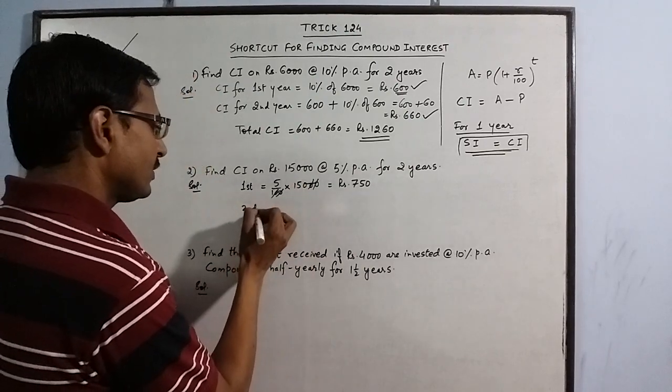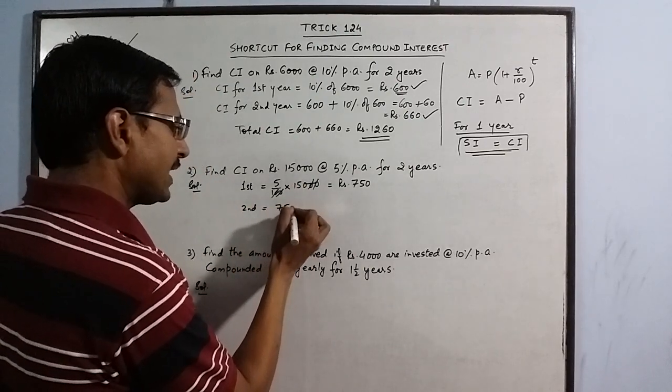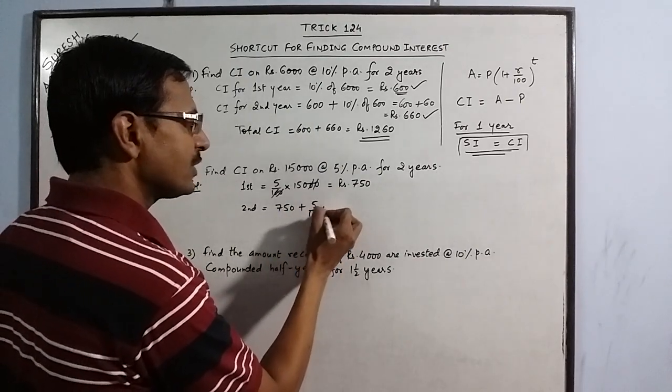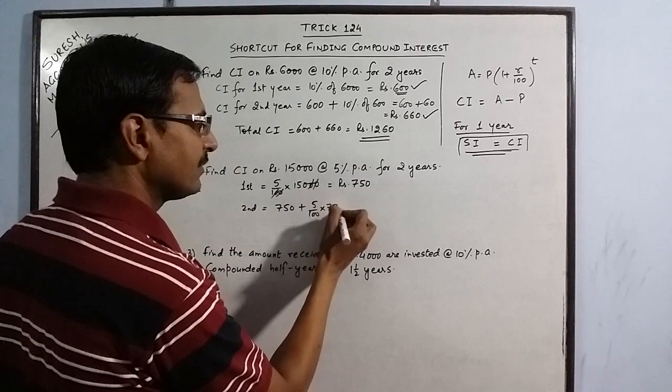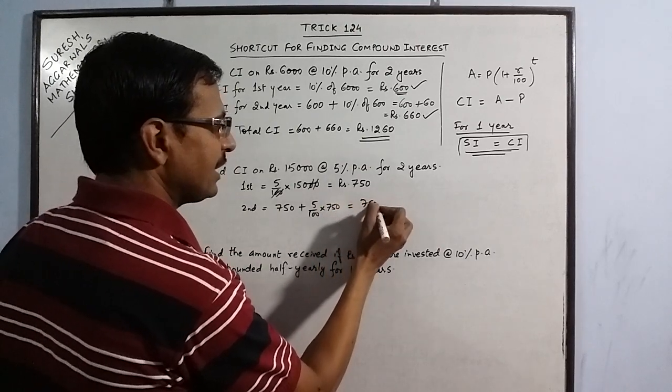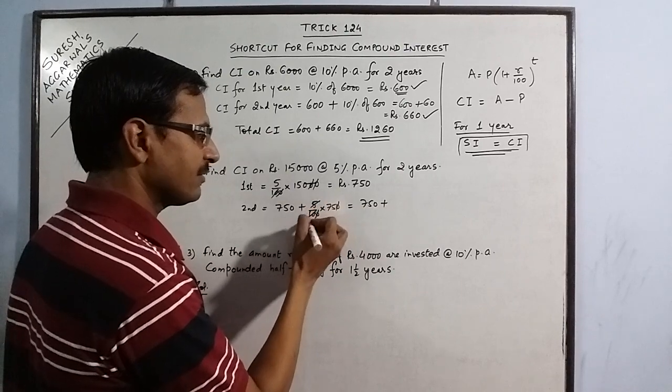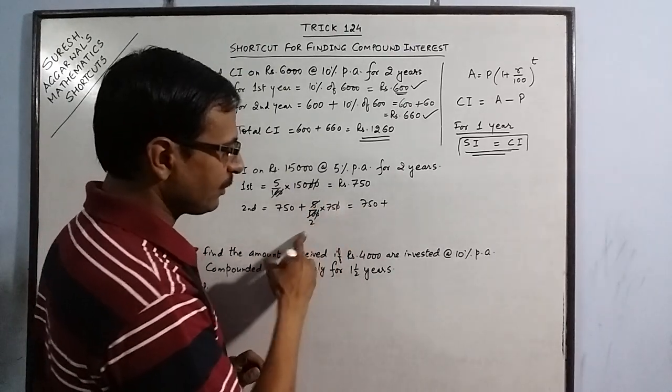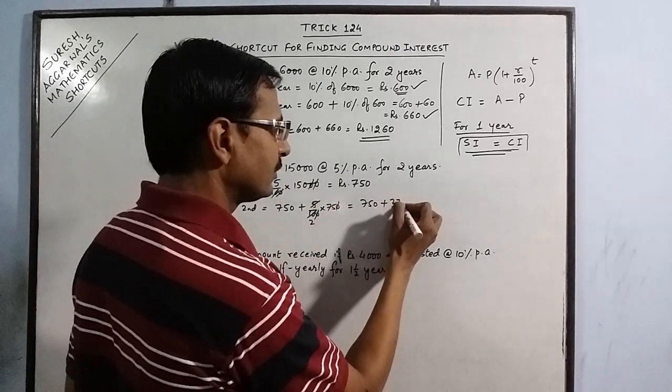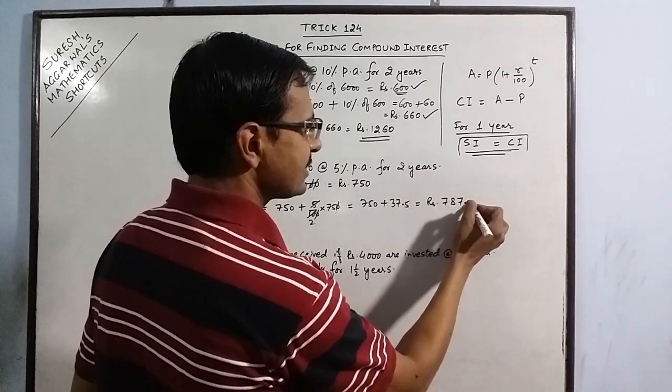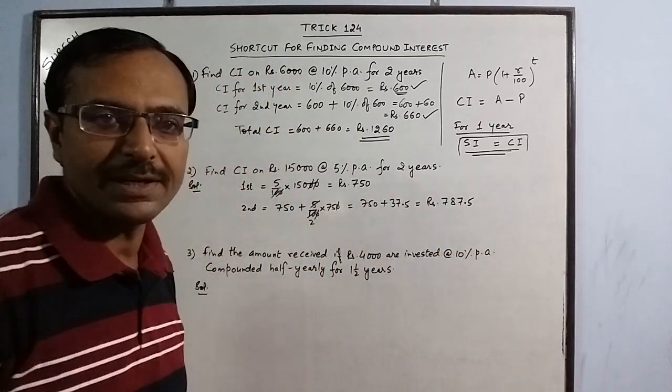For the second year, you have to take 750 and then take the same percentage, 5% of this only, 750. 750 plus 1 zero gets cancelled, 5, 1's up 5, 2's up. 75 upon 2 is 37 and a half. Rs. 787.5 is the interest for the second year.